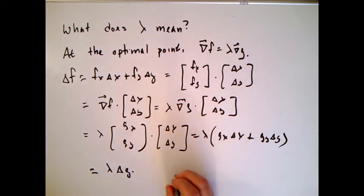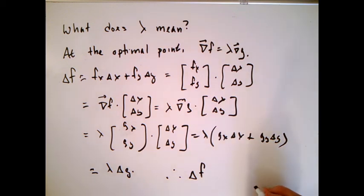Now, let's write this as a little conclusion. What we're going to write down is that the change in the optimal value is almost exactly the same as the value of lambda at the optimal point times the change in the budget constraint.